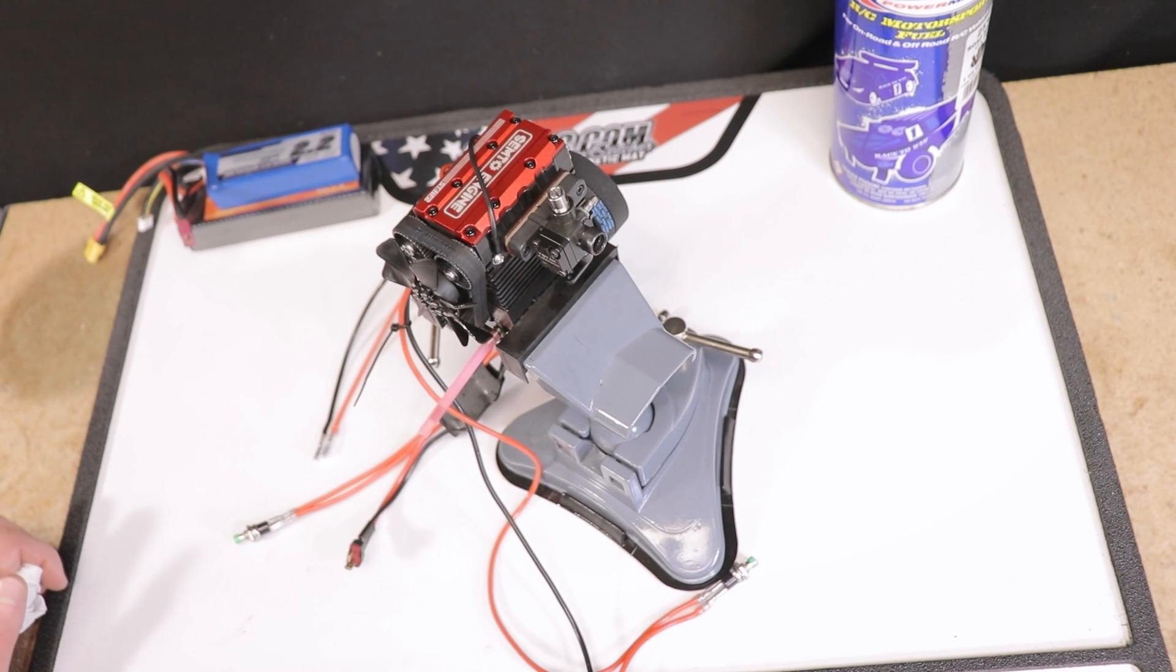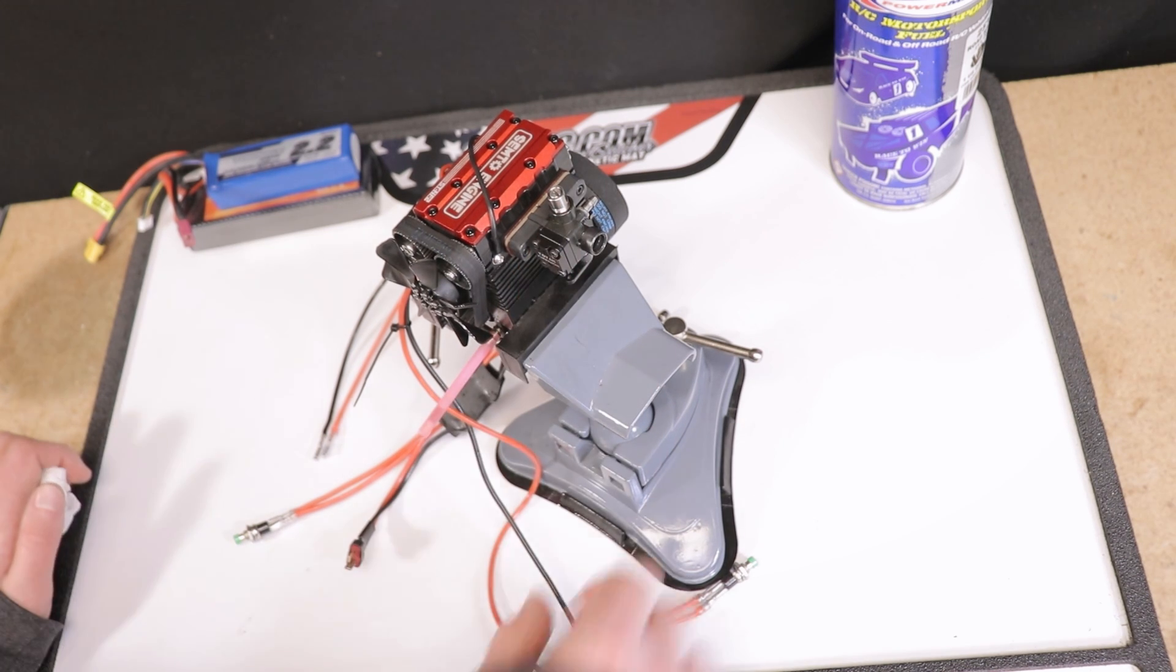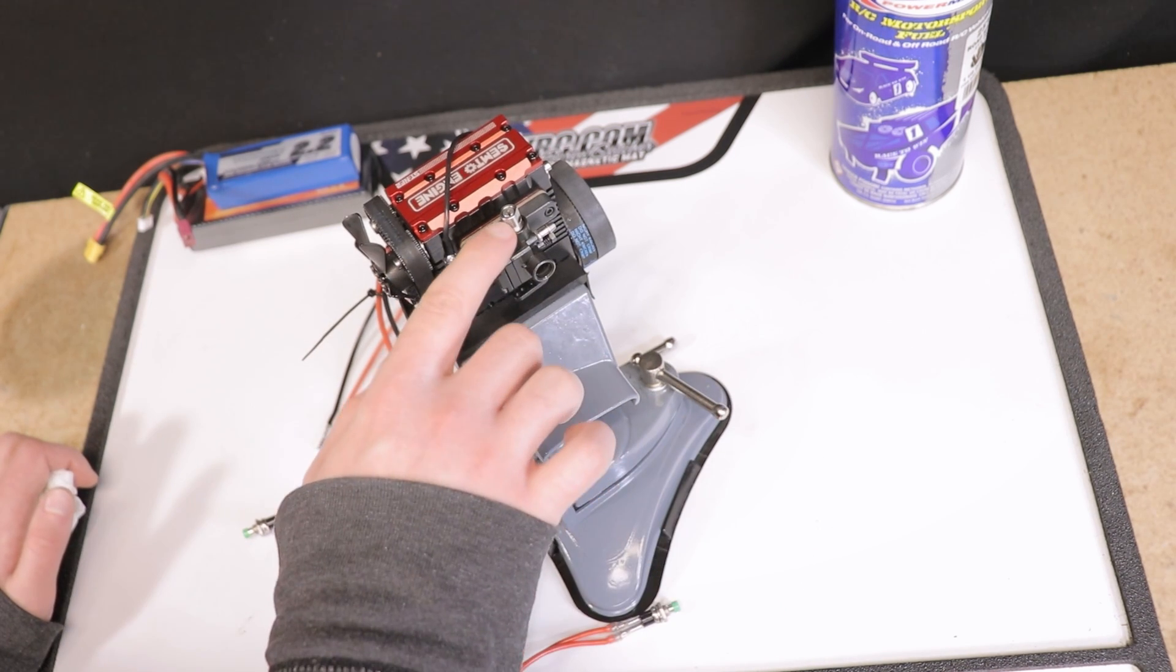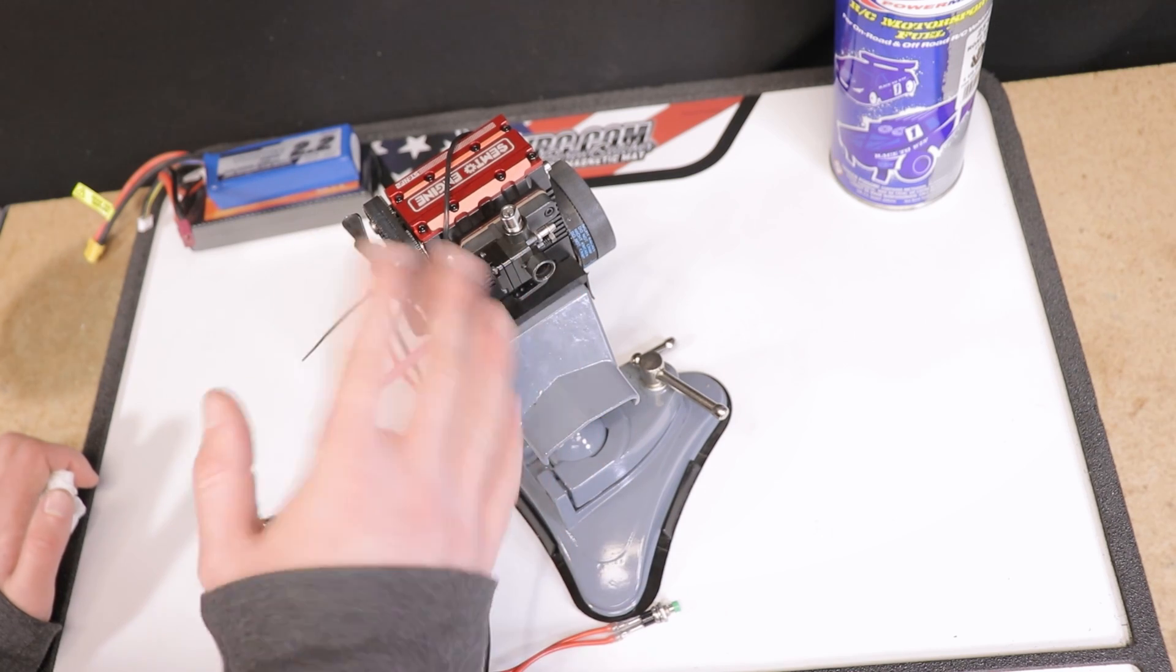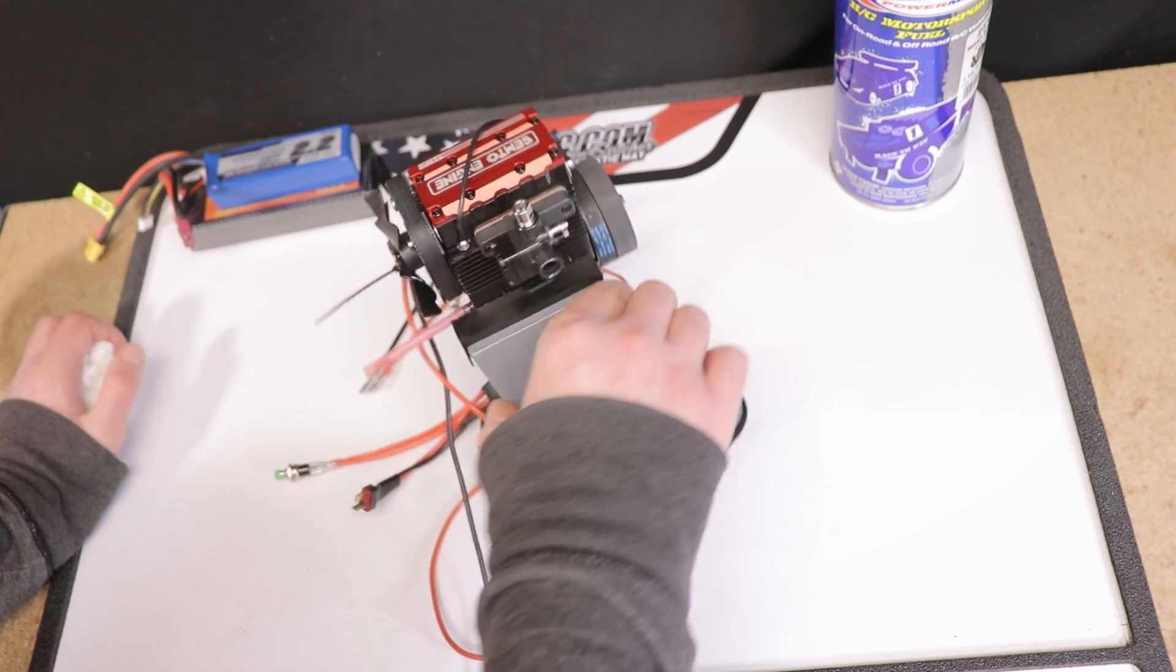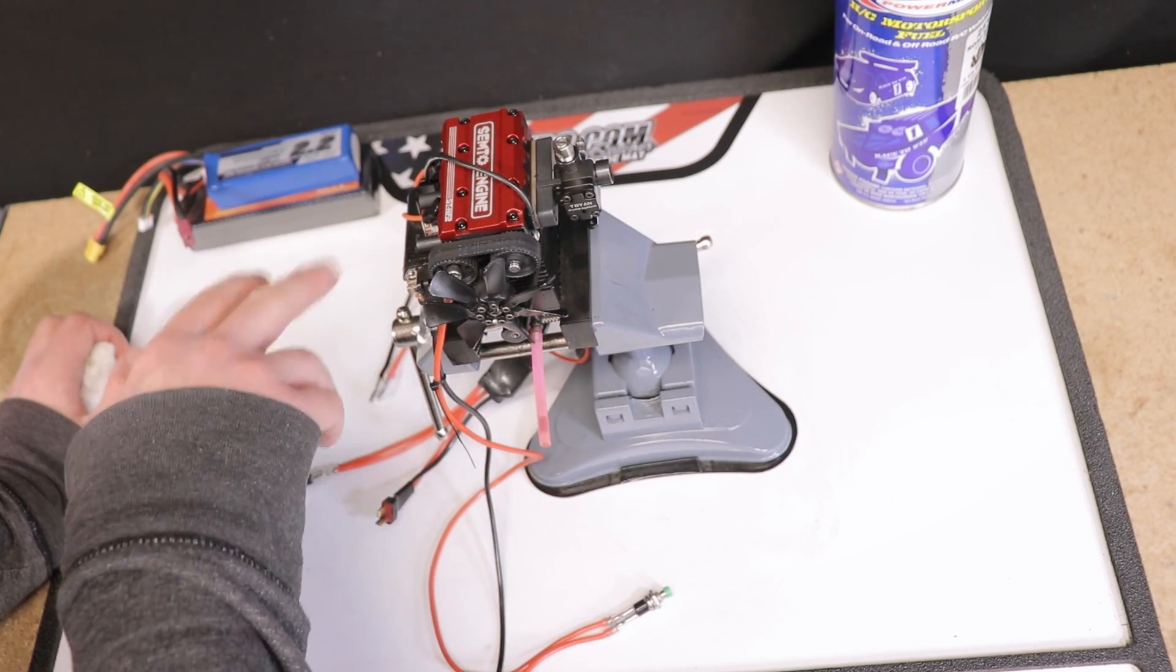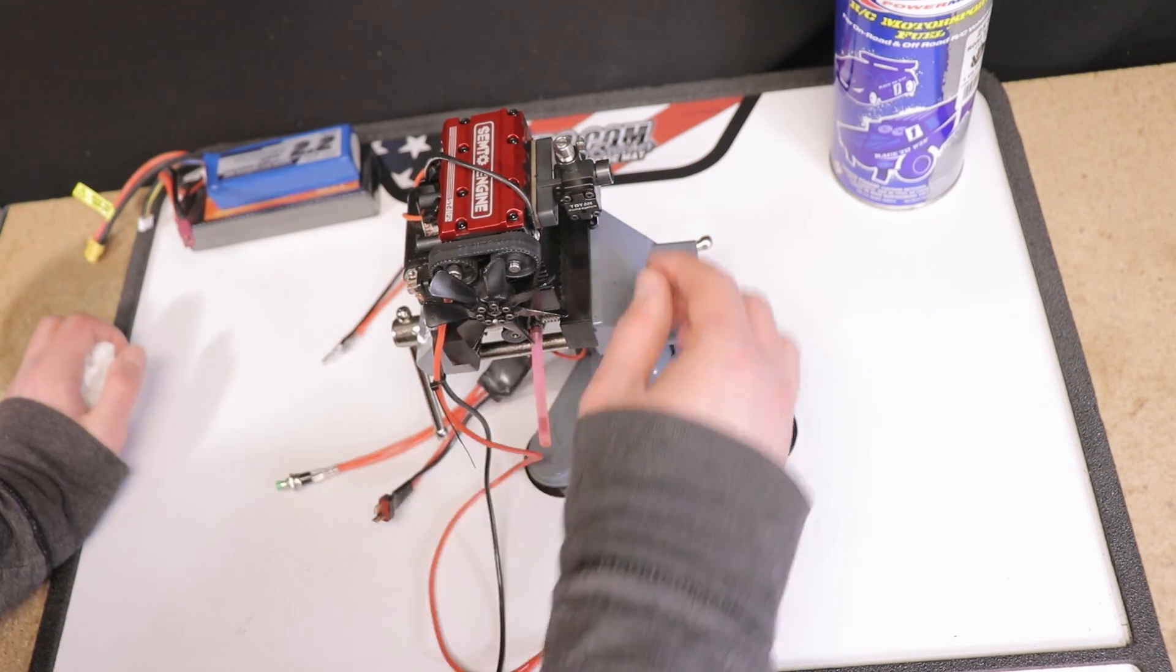They say the carburetor is set up from the factory. I ended up needing to adjust it quite a bit in order to get it to run depending on the environment that you're running this engine in. You may need to adjust a few things. There's definitely some patience required. You make a little bit of adjustment, little by little you start to hear it come to life and then eventually it'll take off.